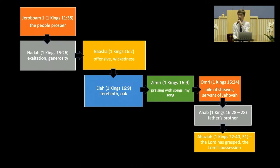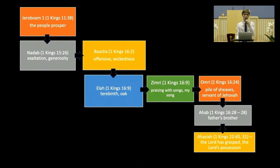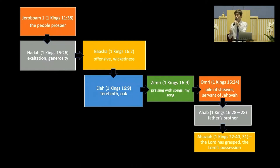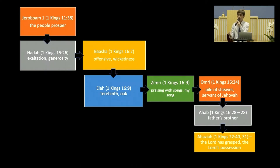From Omri onwards the sin is becoming more and more greater. Omri's son is Ahab. Ahab is a very important character. From Jeroboam until Ahab, Ahab's record of sin is the most detailed. We know that Ahab went against the man of God, Elijah.